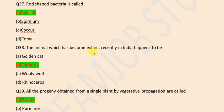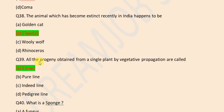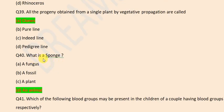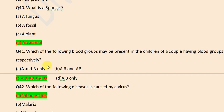The animal which has become extinct recently in India happened to be cheetah. All the progeny obtained from a single plant by vegetative propagation are called clones. What is a sponge? An animal.